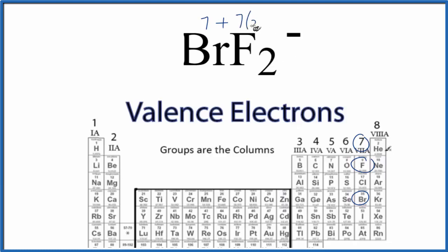We do have 2 fluorines. And this negative sign is an extra electron. When we see a negative sign, electrons are negative, we have an extra electron in this Lewis structure. So that gives us 7 plus 21, 22 total valence electrons for the BrF2- Lewis structure.